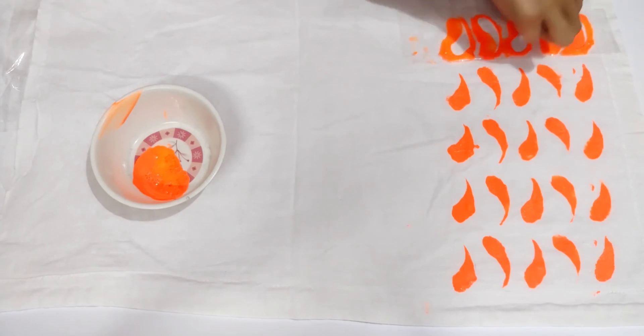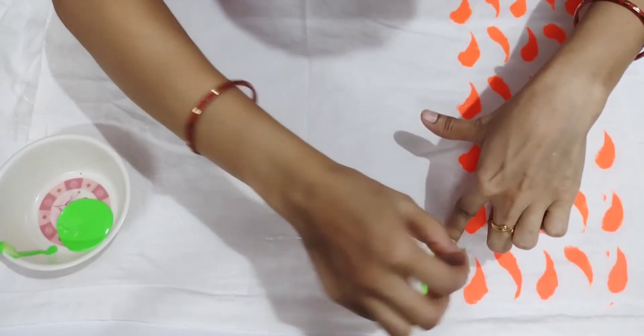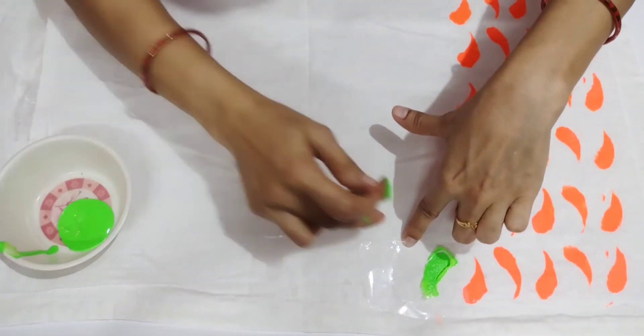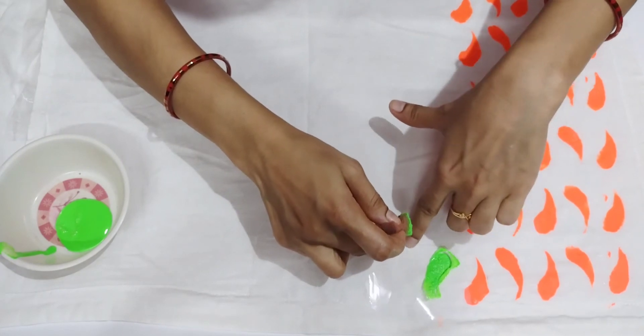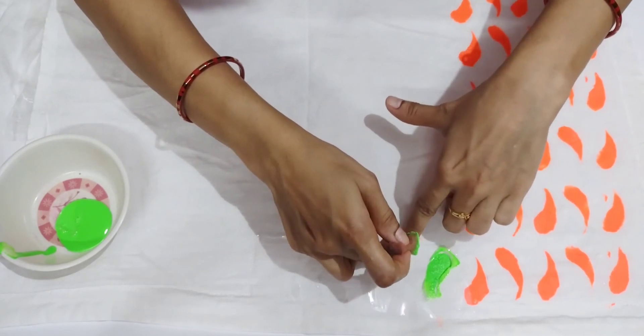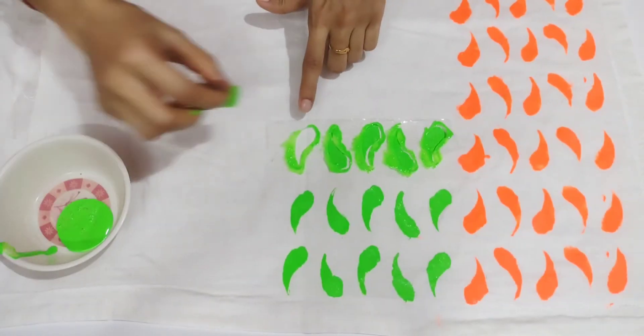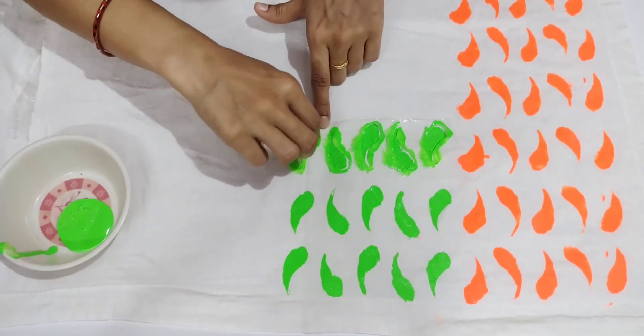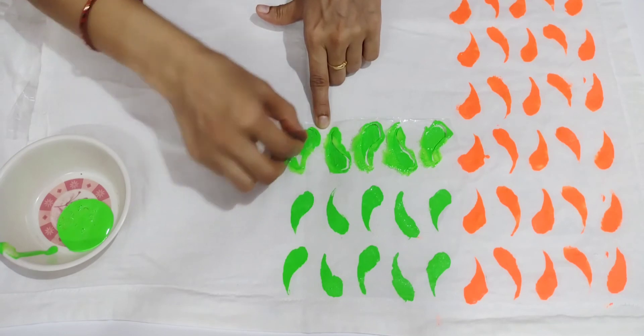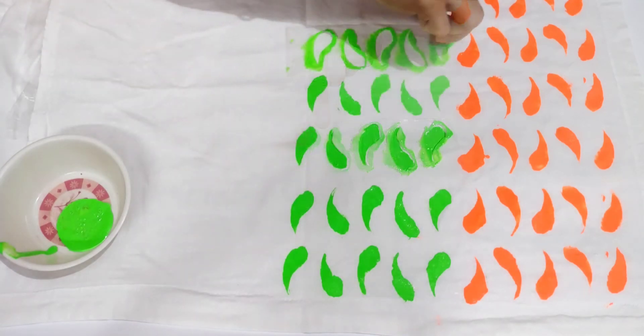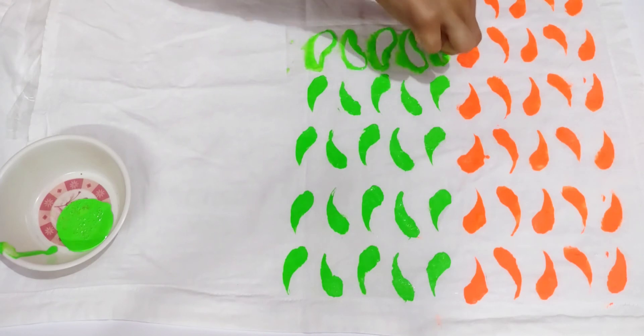I have done a green color here. You can also use a brush. If you want to design something on your dress or your child's dress, you can use the brush. But sponge is more convenient.